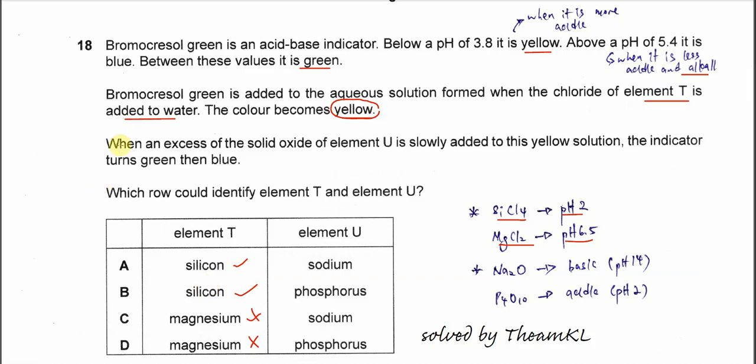Now the next statement is when an excess of solid oxide of element U is slowly added to this yellow solution, the indicator turns green then blue. We know that element U must be the oxide, meaning the group 1 or group 2 metallic oxide, because this solid oxide must be a basic oxide.